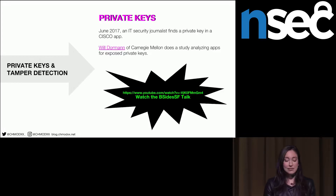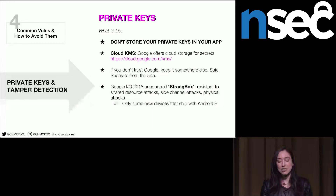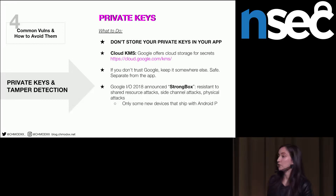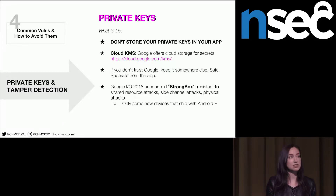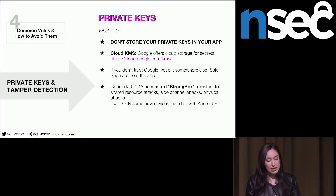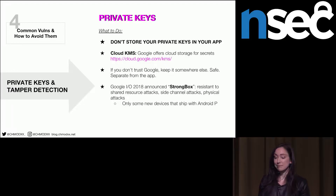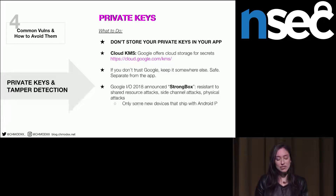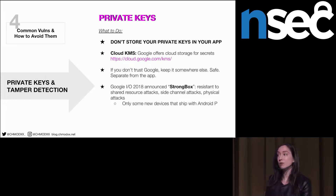Google offers cloud storage for secrets and sensitive information. If you don't trust Google, just keep your private key somewhere else — just not in your application. This year Google I/O also announced StrongBox, a kind of enhanced keystore resistant to shared resource attacks, side channel attacks, and physical attacks — but again, only useful for devices shipping with Android P.